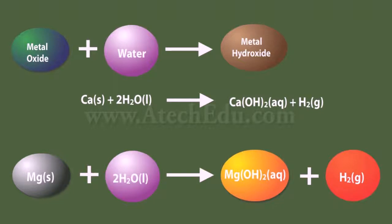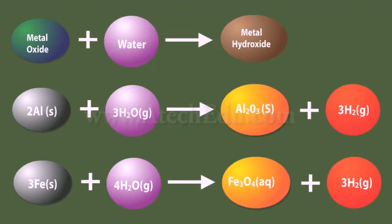Magnesium reacts with hot water to form magnesium hydroxide and hydrogen gas. Metals like aluminium, iron, and zinc only react with steam to form metal oxide and hydrogen gas. However, lead, copper, silver, and gold do not react with water at all.